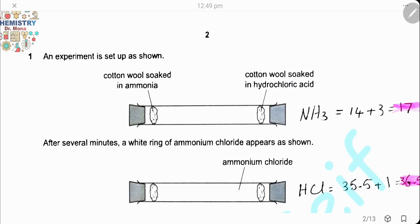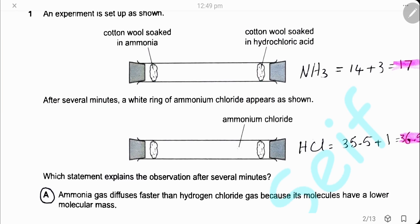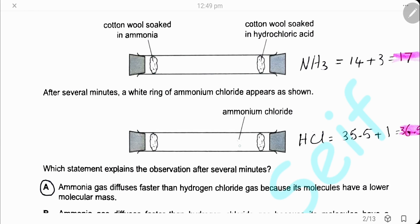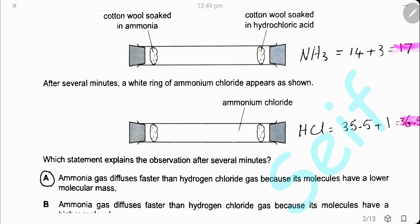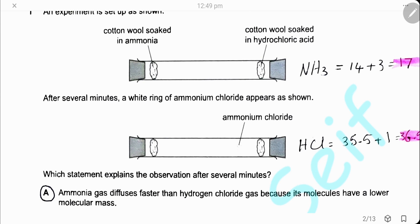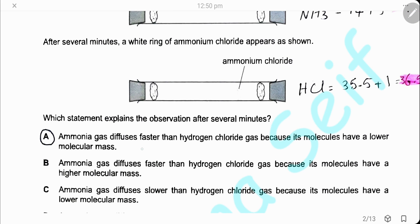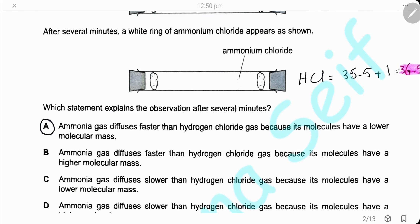Question 1. An experiment is set up as shown. On the left side, you have cotton wool soaked in ammonia, and on the right side, cotton wool soaked in hydrochloric acid. After several minutes, a white ring of ammonium chloride appears, as shown in the second diagram. The rate of diffusion is inversely proportional to molar mass. We calculate the molecular mass of ammonia, which is 17, and hydrogen chloride, which is 36.5. Ammonia gas has lower molecular mass so it diffuses faster. The answer is A.